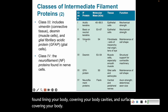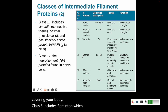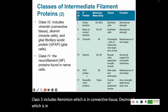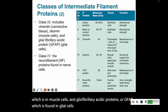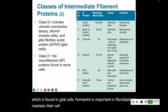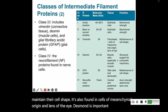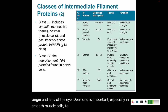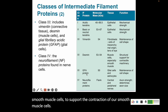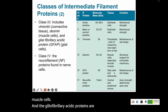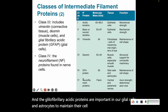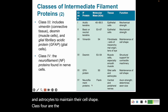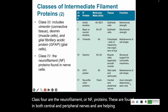Class three includes vimentin, which is in connective tissue; desmin, which is in muscle cells; and glial fibrillary acidic proteins or GFAP, which is found in glial cells. Vimentin is important in fibroblasts to maintain their cell shape — it's also found in cells of mesenchymal origin and the lens of the eye. Desmin is important especially in smooth muscle cells to support the contraction of smooth muscle cells. The glial fibrillary acidic proteins are important in glial cells and astrocytes to maintain their cell shape. Class four are the neurofilament or NF proteins — these are found in both central and peripheral nerves and help with axon strength and determining the size of axons.